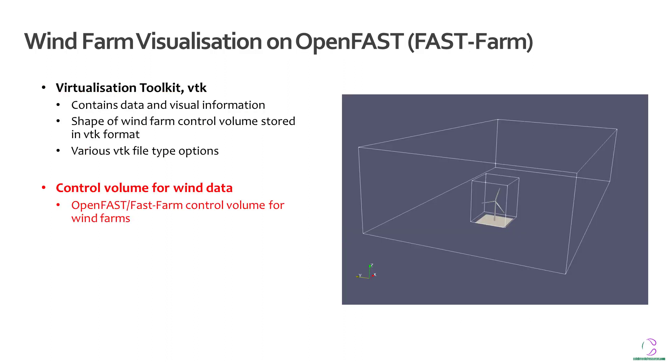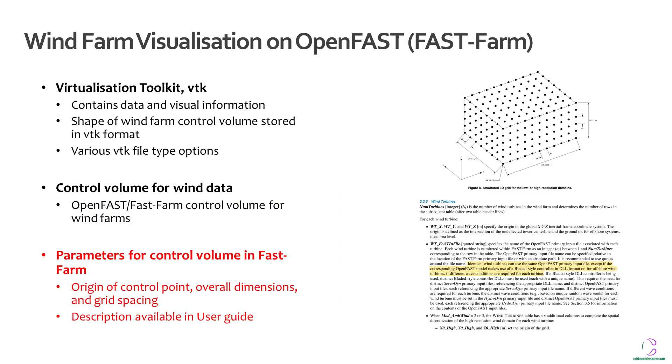So basically for the wind data you actually have control volumes. The large cuboid you see here is for the low resolution data and the smaller cube is for the high resolution data. So you can see on the right some of the different parameters used to generate that control volume. There are different descriptions which you can find in the fast farm documentation. So it talks about how to put grid lines along it.